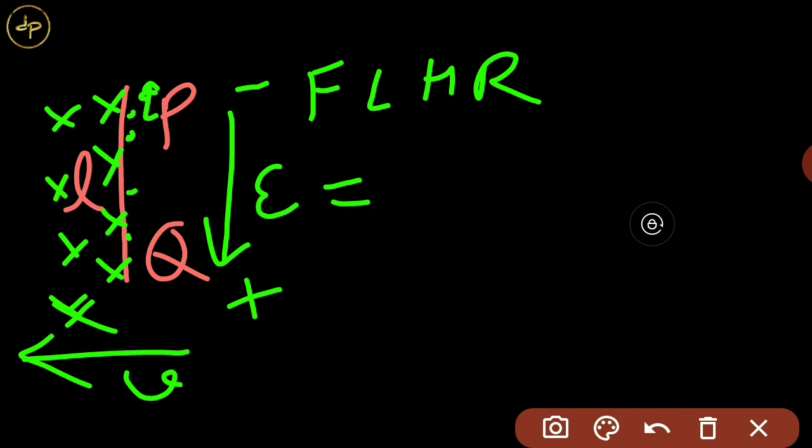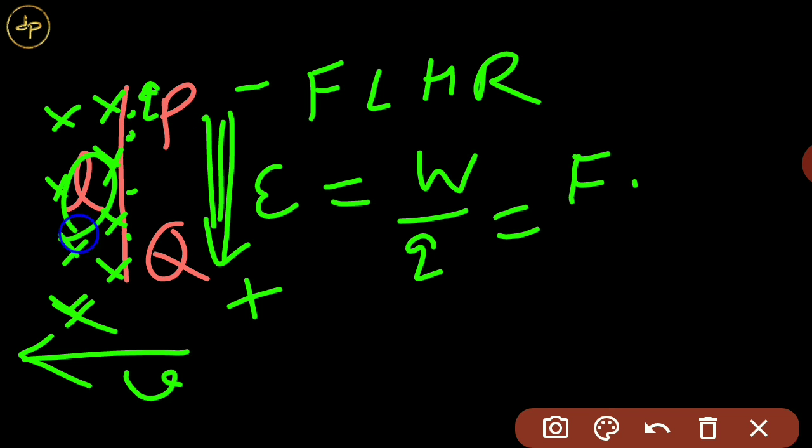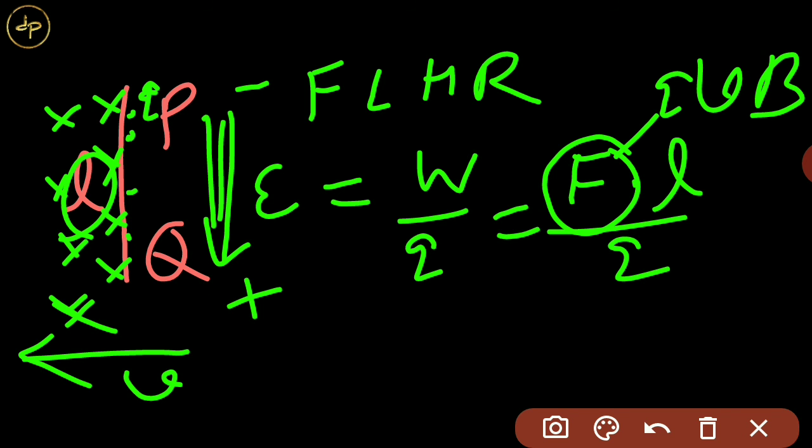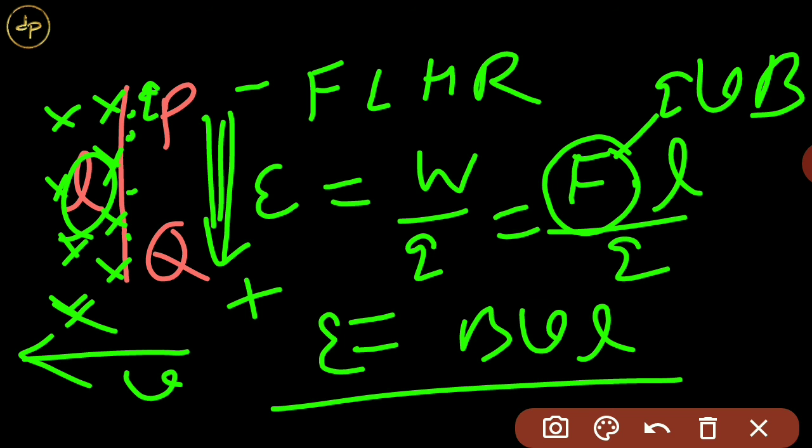And that EMF is equal to work done per unit charge. Now work done equals force on the charge into displacement. Suppose this displacement is the length L. F times L by Q. Force on the charge we know by the Lorentz rule, that is QVB perpendicular. Then Q will cancel, and we find the induced EMF between PQ will be BVL. So this is the second way to visualize how this open potential difference is created across PQ.